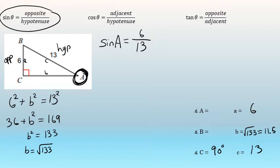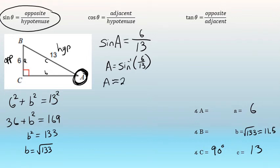If I know that the sine of angle A is 6 over 13, that means angle A is the inverse sine of 6 over 13. The inverse sine of 6 over 13 to the nearest tenth is 27.5, and that's the measure of angle A, at least to the nearest tenth.